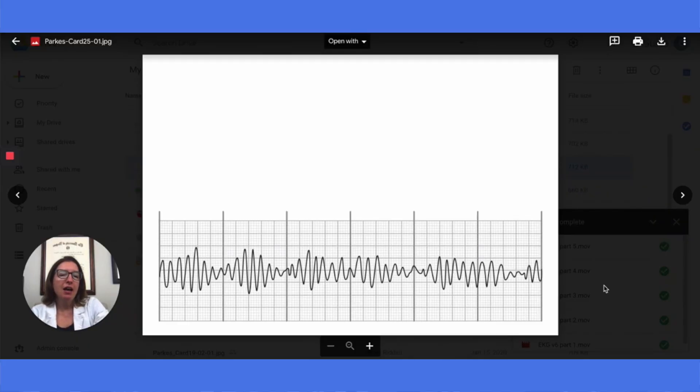In this rhythm, we have something called torsades de pointes, which I hope I'm saying right. I might be butchering it because it's definitely not above me to butcher a name. When we look at this strip, this doesn't look anything like a normal EKG strip. We don't have nice little P waves and QRS complexes.